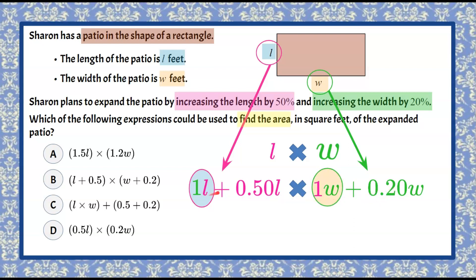So we have 1L plus 0.50L which represents 1.50L, and if we write this decimal as a percent, that's 150% which makes sense. We're going to have 100% of what we started with plus an additional 50%. So our width is going to be 1W plus 0.20W or 1.20W. So 120% of the width.